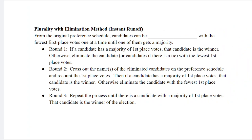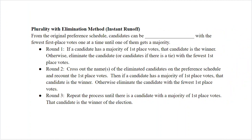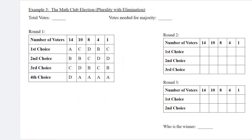Now let's look at Plurality with Elimination, also called instant runoff. We take our original preference schedule and eliminate candidates with the fewest first place votes until we get one candidate with a majority. In round one, if a candidate already has a majority of first place votes, we're done — that person wins. Otherwise, we eliminate the candidate with the fewest first place votes, cross them out, recount first place votes, and continue until someone has a majority.